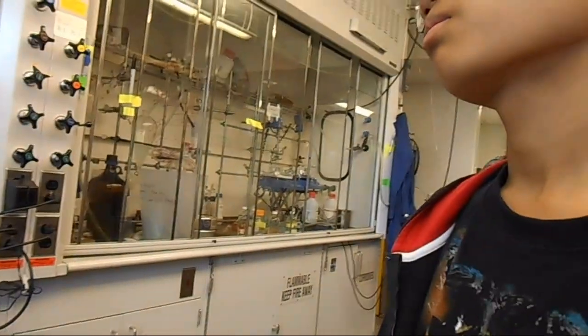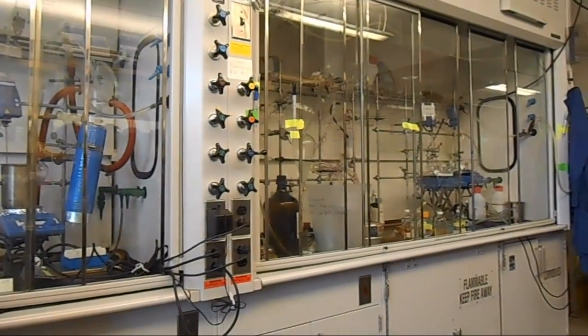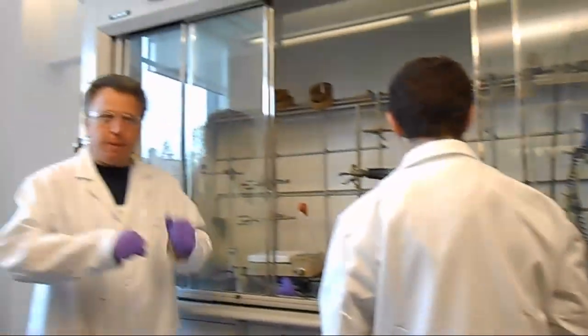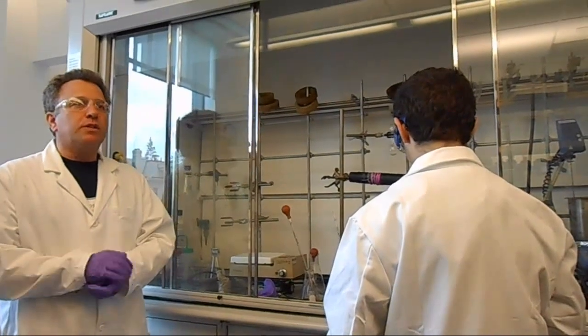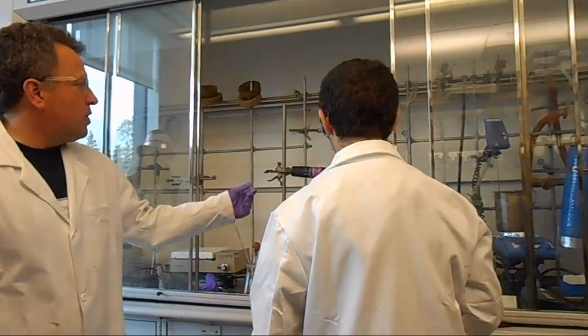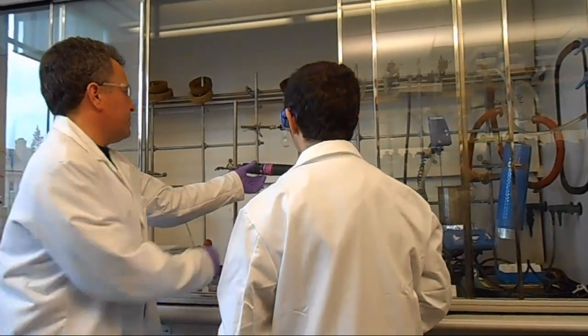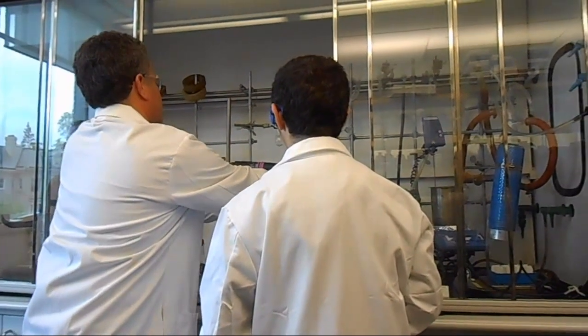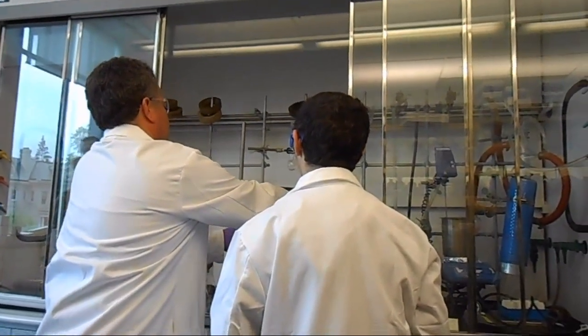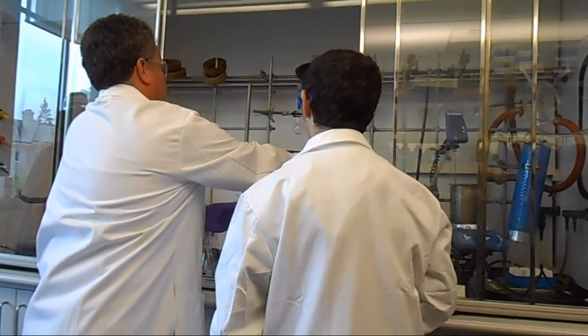One neat thing about polymers is, depending on the individual building blocks that you use to make the polymers and how you combine them, they can have all sorts of different properties. Fishing line and nylon rope is very strong, so this is going to be incredibly difficult to break.